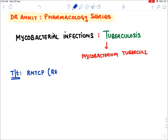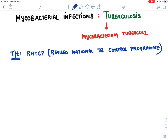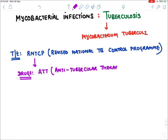That national program is known as RNTCP, which stands for Revised National Tuberculosis Control Program. We will be discussing the latest guidelines of 2016. According to RNTCP, the drugs for TB are known as ATT — Anti-Tubercular Therapy. The method of giving the drug to our patient is known as DOTS therapy.